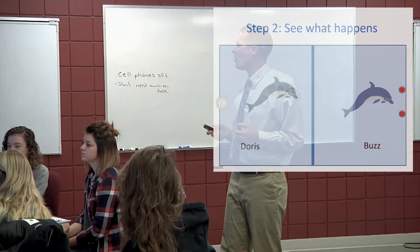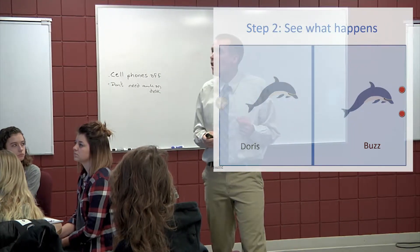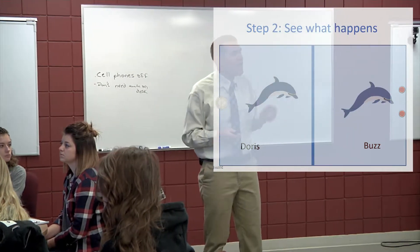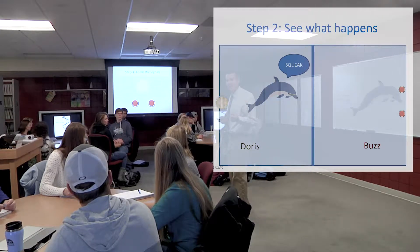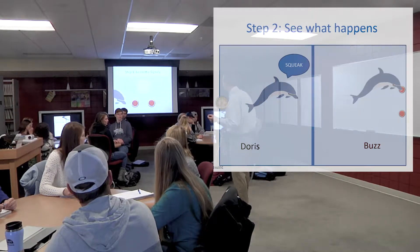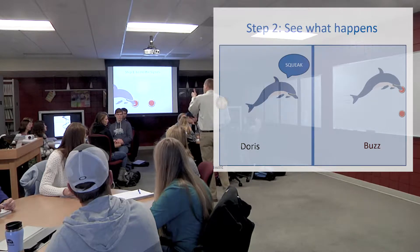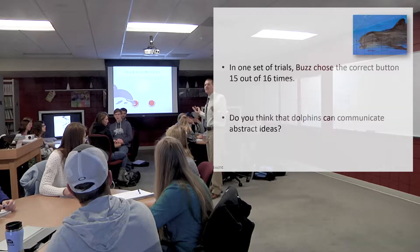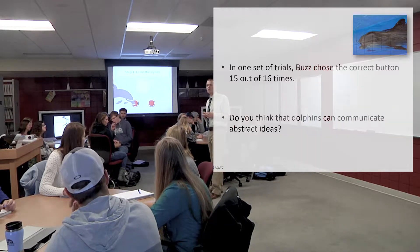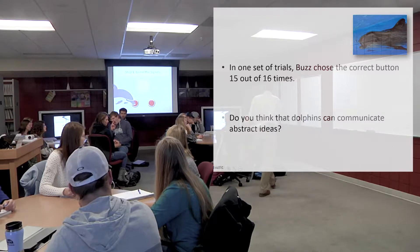The researcher tested to see if Doris could communicate to Buzz whether to push the button on the left or the button on the right by testing the dolphin 16 times, sometimes with the light flashing and sometimes not. Buzz pushed the correct button 15 out of 16 times.